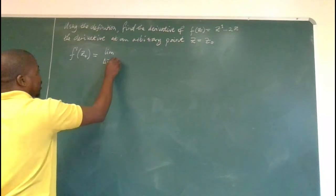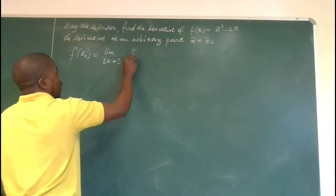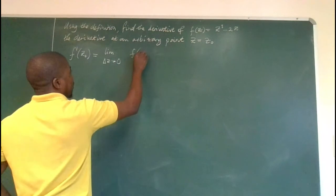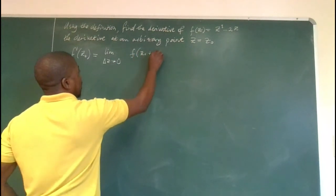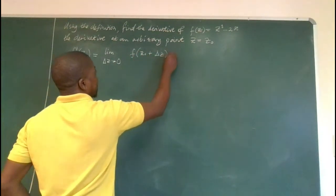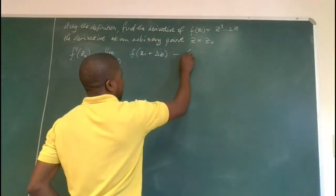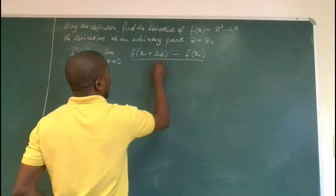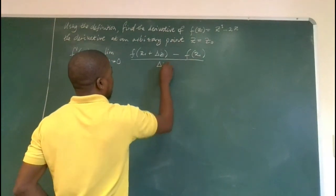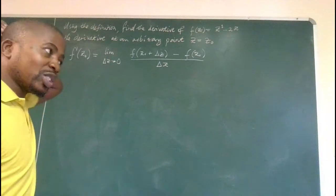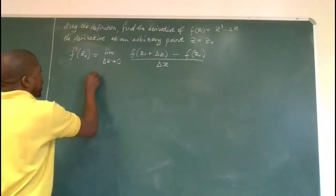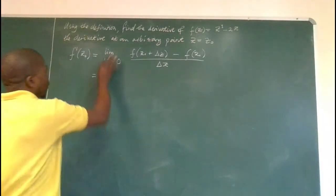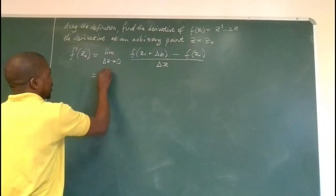The limit as delta z approaches zero of f of z naught plus delta z minus f of z naught, all over delta z. This is the formula by definition. Now what do we do next? We maintain limit as delta z approaches zero. If you leave out this expression, then it becomes wrong.